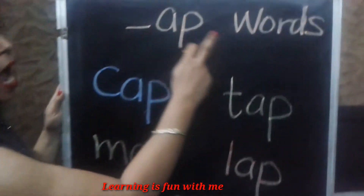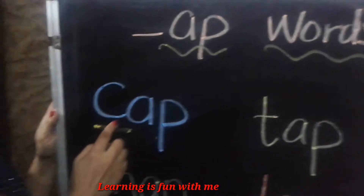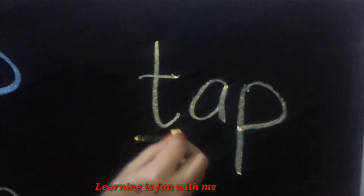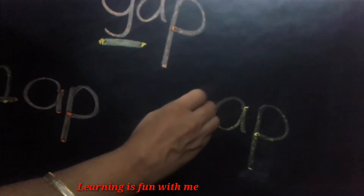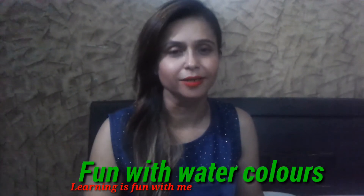Let's revise again. Ap words. With letter C, it's cap. With letter T, it's tap. With letter M, it's map. With letter L, it's lap. With letter G, it's gap. Now tell me, if I write letter M, which word is this? Map. Yes, it's map. And now if I write letter C, which word is this? Cap. Yes, it's cap.